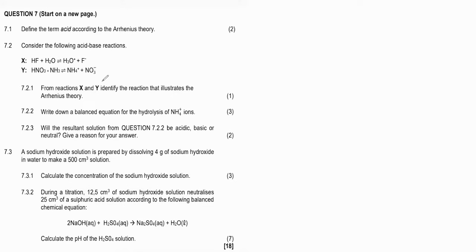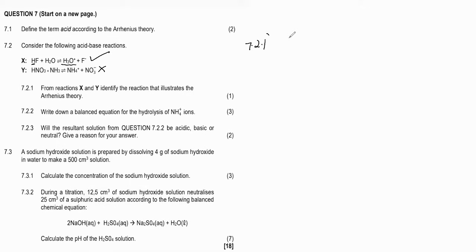We know that according to Arrhenius, either the acid must produce hydronium ions or the base must produce hydroxide ions. Looking at X, HF is obviously an acid because it produces hydronium ions. Looking at Y, neither hydronium ions nor hydroxide ions are produced, so Y does not illustrate Arrhenius theory — it illustrates the Lowry-Brønsted theory. So we go with X. 7.2.1 answer: reaction X.